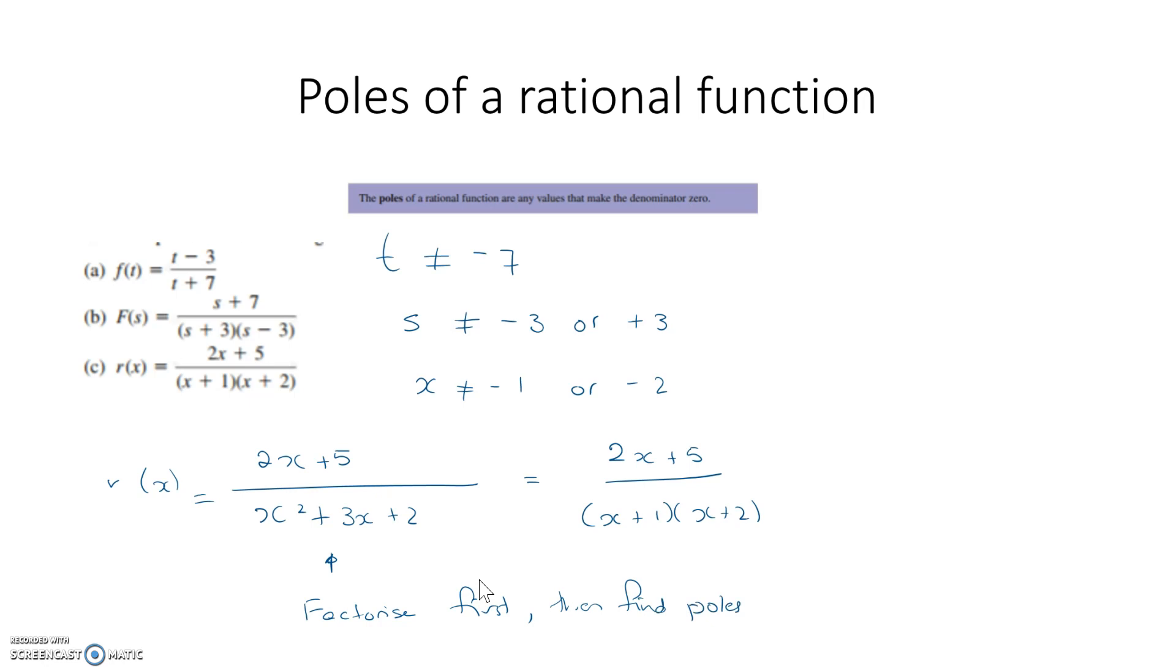So all we're doing is finding values for the variable that make the bottom line 0, values that we cannot have.